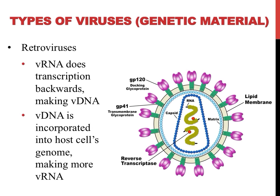The last classification of virus we're going to refer to is a type of RNA virus called a retrovirus. Normally in cells, DNA is transcribed into RNA, which is then translated into a protein. The term retro sometimes means backwards — the term retrograde, for example, means to move backwards. Retroviruses do the process of transcription backwards, using RNA to make DNA, using a specific enzyme called reverse transcriptase.